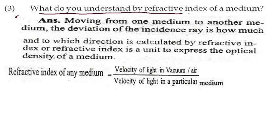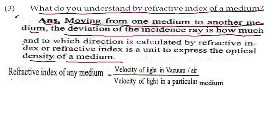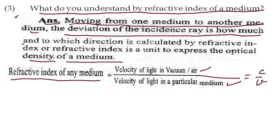What do you understand by the refractive index of a medium? Moving from one medium to another, the deviation of the incident ray — how much and in which direction — is calculated by the refractive index. Refractive index is a unit to express the optical density of a medium. The formula is: refractive index (mu or n) = velocity of light in vacuum (c) divided by velocity of light in the particular medium (v). So mu = c/v, or n = c/v.